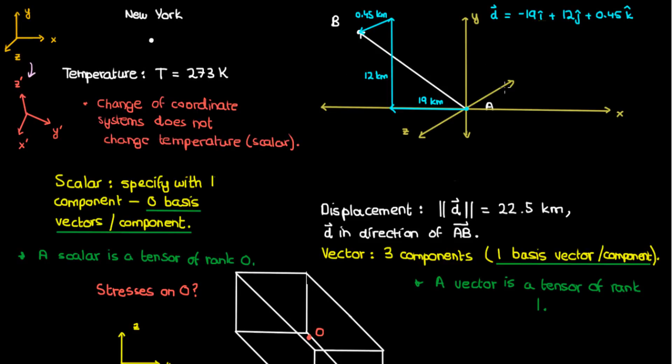Let's go to our displacement vector. Recall that this vector represented the displacement from the JFK airport, point A, to the Empire State Building, point B. Now I originally drew my x, y, z coordinate system like this, which meant that the displacement vector could be described as the sum of three components, negative 19i plus 12j plus 0.45k.